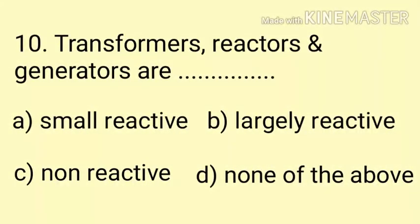Question number 10. Transformers, reactors and generators are dash. Option A: small reactive. Option B: largely reactive. Option C: non-reactive. Option D: none of the above. Dekho, transformer, reactor aur generator — inme winding hota hai, to isliye yeh largely reactive hai. The correct answer is Option B.